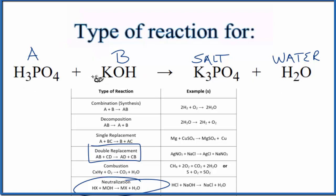We probably should balance the reaction though. Let's see, we need three potassium atoms and that would mean three waters. So now that's balanced, it makes a little more sense. This is the type of reaction for H3PO4 plus KOH—phosphoric acid plus potassium hydroxide.